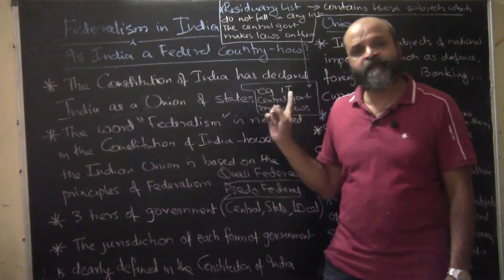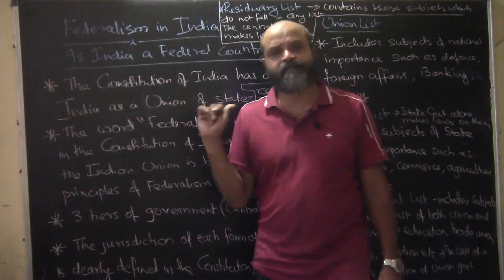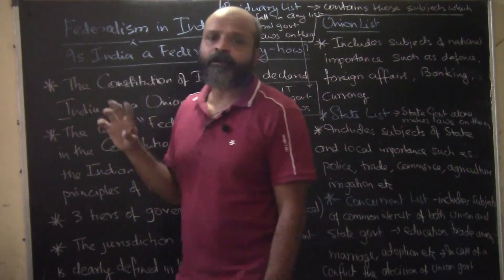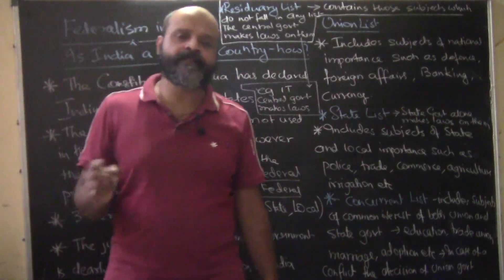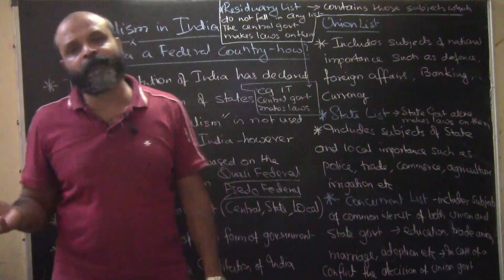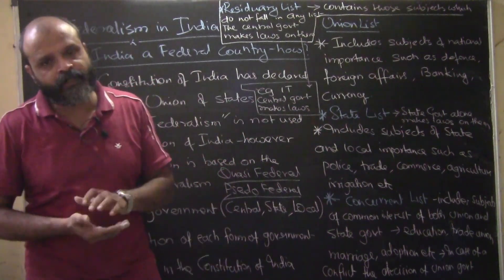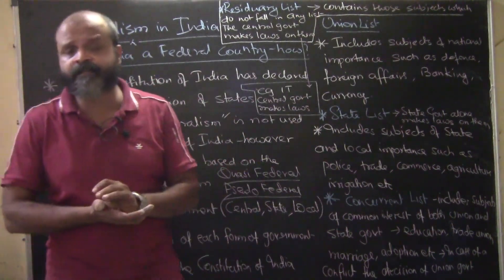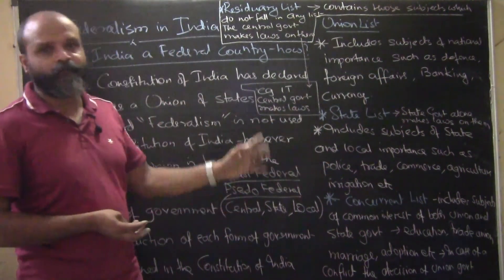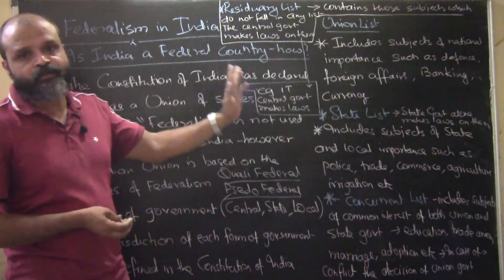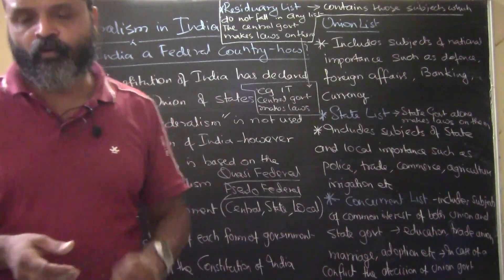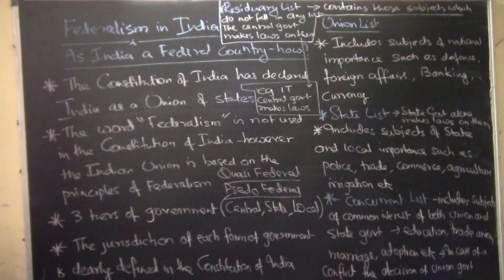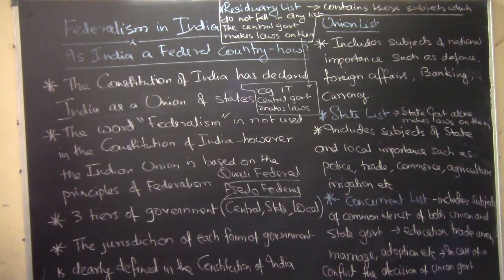These lists are very important if you are asked to describe India as a federation. You will need to jot down all these points, specify these lists, describe the jurisdiction of each, explain what happens in case of a conflict, and provide examples covered in each list. Please take a snapshot so that you have a better idea of how to deal with answering such questions.